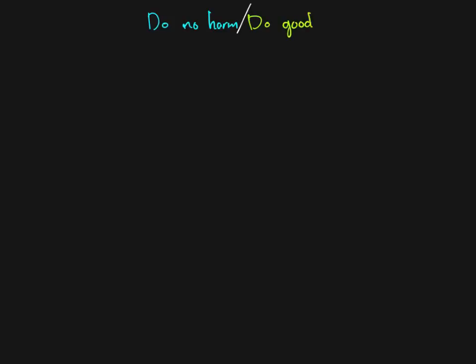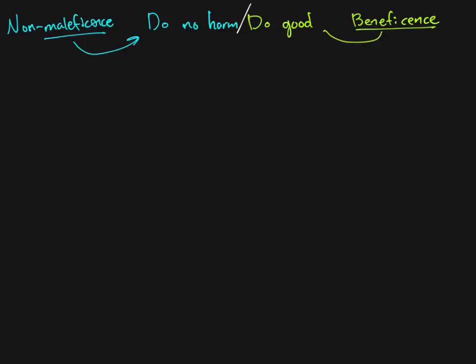On the flip side of this, we try to do good. You'll see the term beneficence in these ethics codes, and on the other side you'll see non-maleficence. Maleficence means doing harm, so non-maleficence is just a fancy way of saying do no harm, and beneficence is the idea of doing good — these are just fancier ways of saying the same thing.